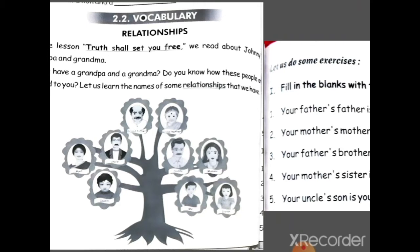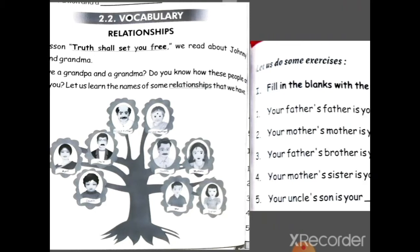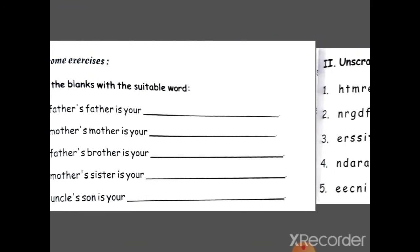Let's learn the names of some relationships. Fill in the blanks with the suitable word. Your father's father is your — aapke papa ke papa aapke kya hote hain? Yes, aapke dada ji. And dada ji ko English mein kya bolenge? Grandpa. Your mother's mother — aapke mama ki mama kaun hai? Yes, aapke nani ji. And nani ji ko kya bolte hain? Grandma.